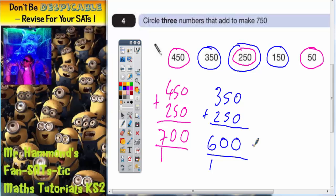As you can see, there are two possible answers. You can either have your 350, your 250, and your 150, as I've circled there in blue.